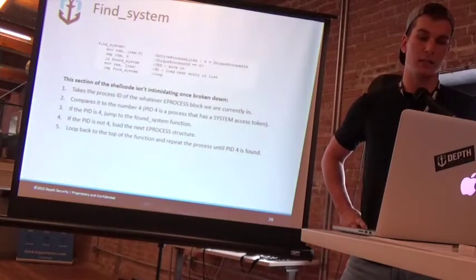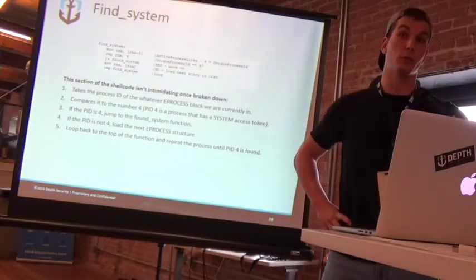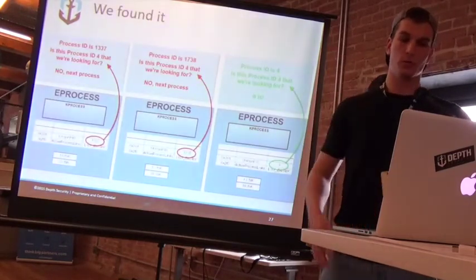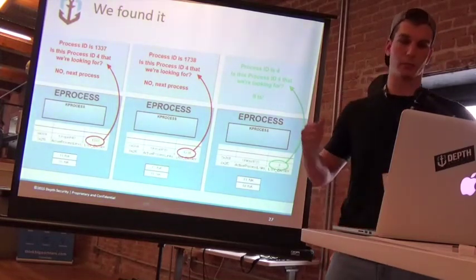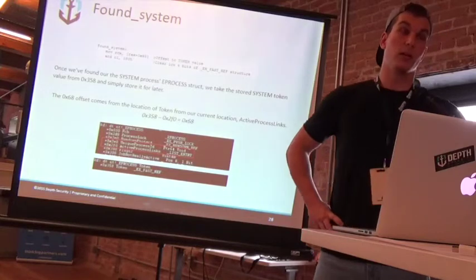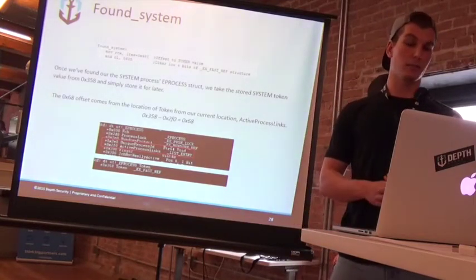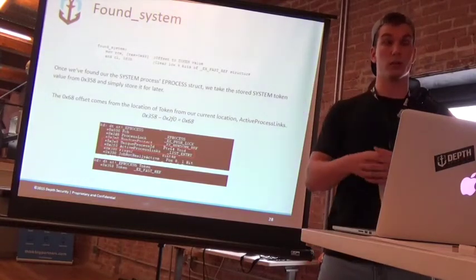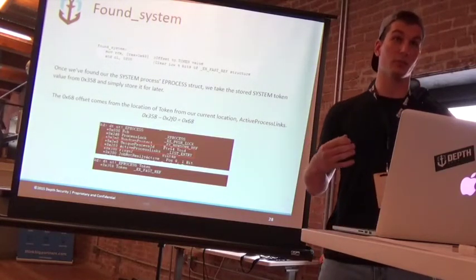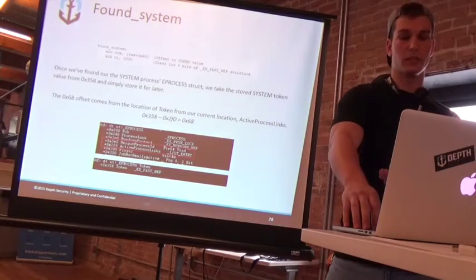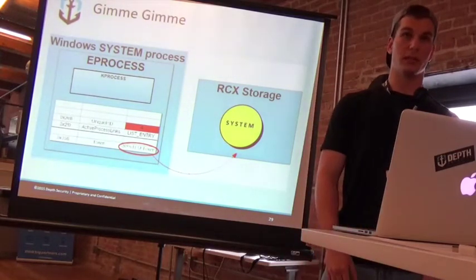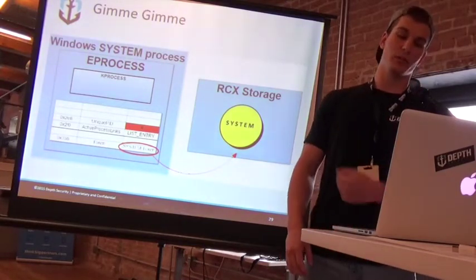The second function is find system. Basically we're going to be looking for process ID 4. We traverse all those running processes on the machine and find the one that is PID 4. We jump through every single one — is this process ID 4? No. Go to the next process. Is this process ID 4? Yes. Then we jump down to found system. Within the eProcess structure, there's a token value at 0x358 hex in, which contains the token the process is running in context of. For process ID 4, that user is NT Authority SYSTEM — the highest level local user you can have on a machine. We take that value and shove it into register RCX. Think of a register as a storage space — we shove that token into storage and use it later.